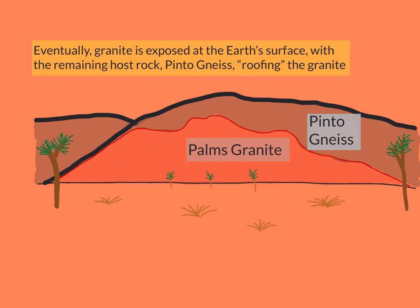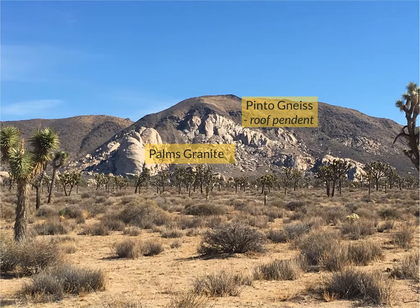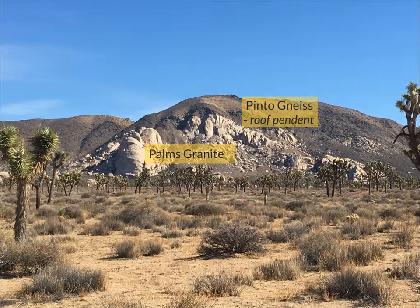The Pinto Gneiss is referred to as the Roof Pendant to the Palm's Granite, as it forms a geologic roof over this granitic body. Today, Ryan Mountain at Joshua Tree National Park offers an excellent example of a roof pendant, where you can see the dark brown Pinto Gneiss overlapping the Palm's Granite, which had intruded from beneath.